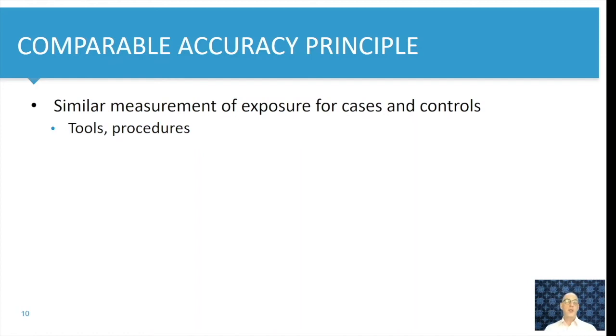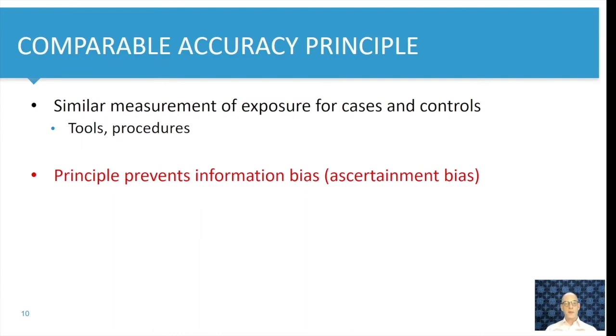So there's quite some room of differences in measuring the exposure for cases and controls. But taking care of the comparable accuracy principle really prevents information bias, ascertainment bias.